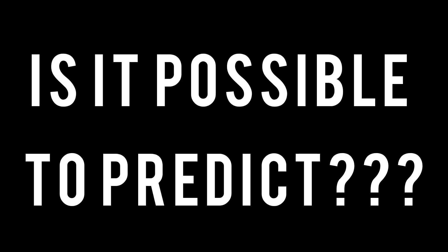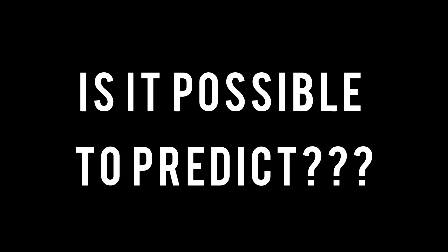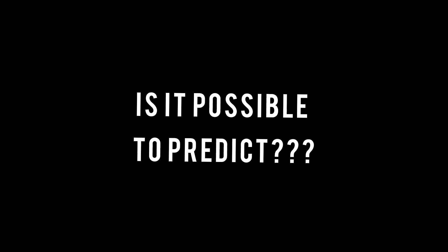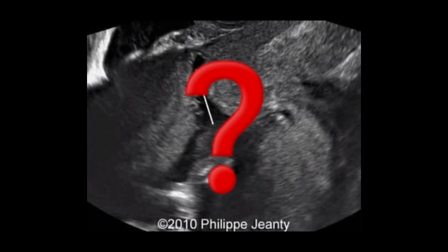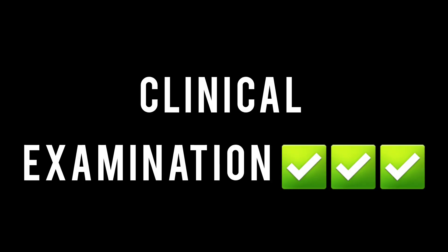The next question was: how can we predict that a scar might rupture during procedures such as trial of labor after cesarean (TOLAC) or vaginal birth after cesarean (VBAC)? Although attempts have been made to predict the risk of scar dehiscence using ultrasonographic measurement of the lower uterine segment thickness, it has been proved that this is not very useful. The emphasis is on having a clinical approach to identify scar dehiscence or rupture.